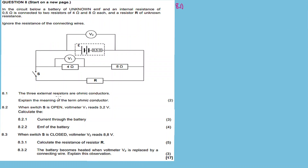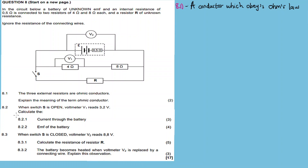Question 8.1: The three external resistors are ohmic conductors. Explain the meaning of the term 'ohmic conductor'. An ohmic conductor is a conductor which obeys Ohm's law. In a question like this on electric circuits, you are expected to define or state Ohm's law as well as explain what an ohmic conductor is — that's an important exam tip.